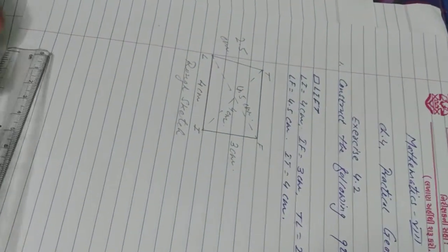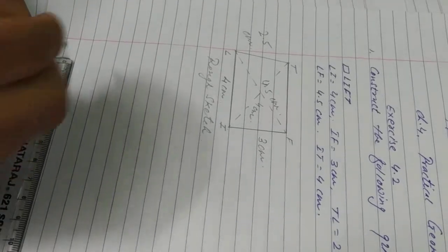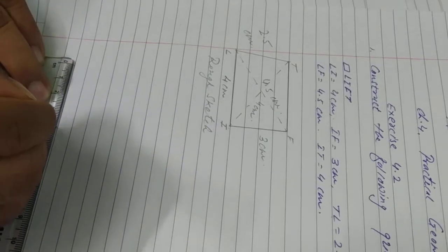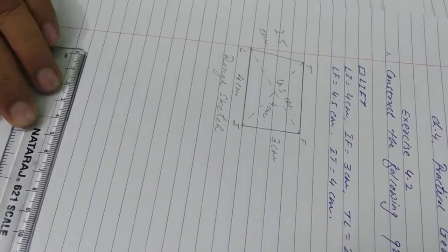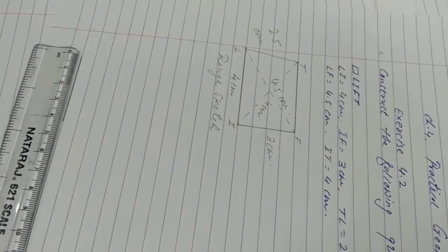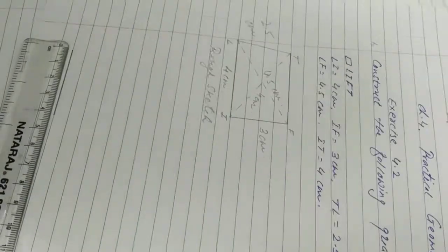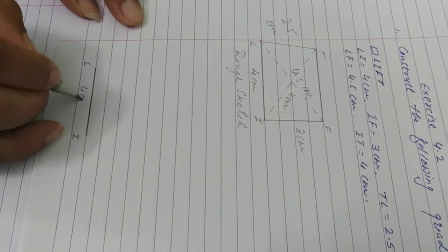Now let's try to understand how to construct. See first of all LI, LI means what, baseline having measurement of 4 cm. See here 0 to 4. LI 4 cm.